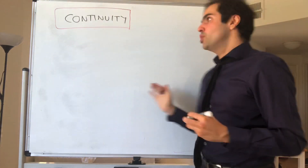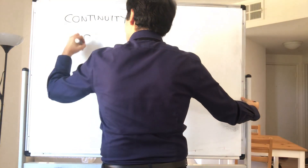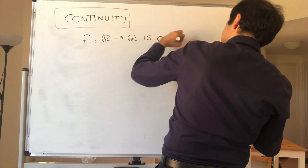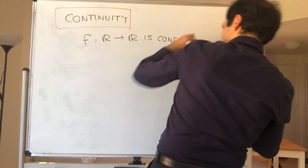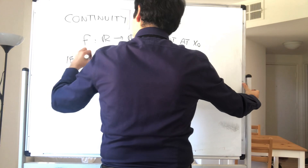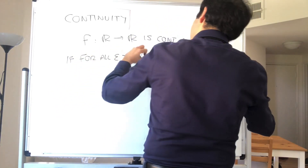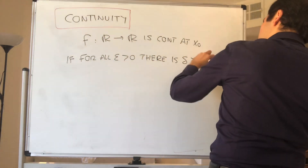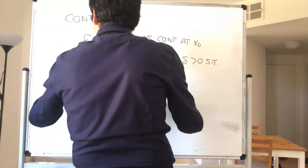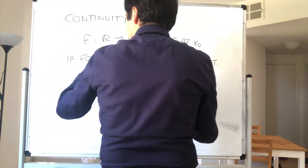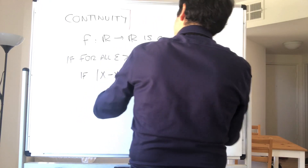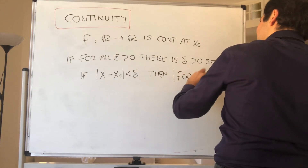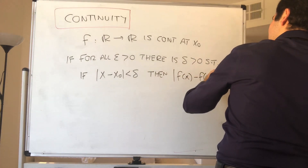So let me remind you what epsilon-delta says. So f, let's say from the real numbers to the real numbers, is continuous at x naught if for all epsilon, there is a delta, such that for all x, if the distance between x and x naught is less than delta, then the distance between f of x and f of x naught is less than epsilon.